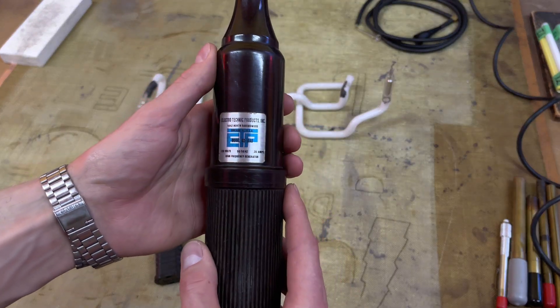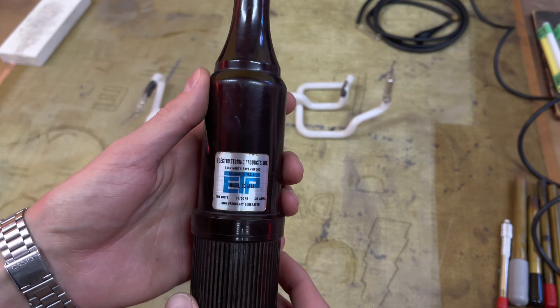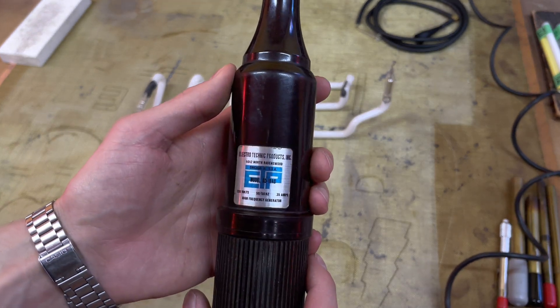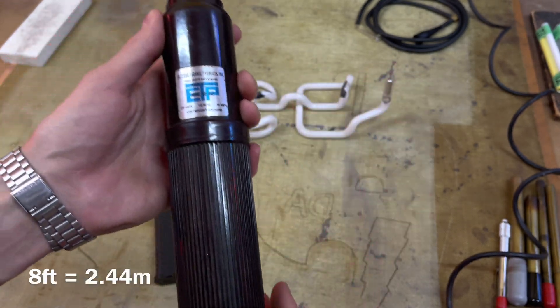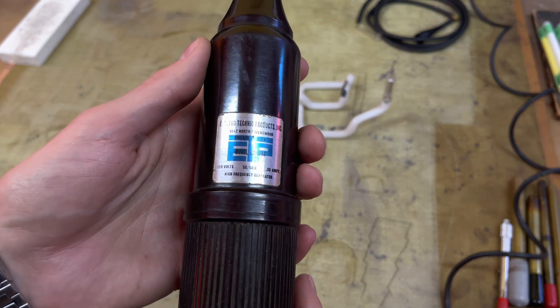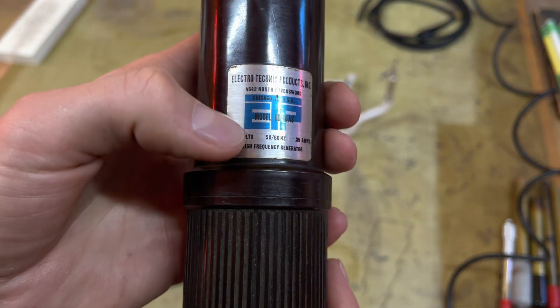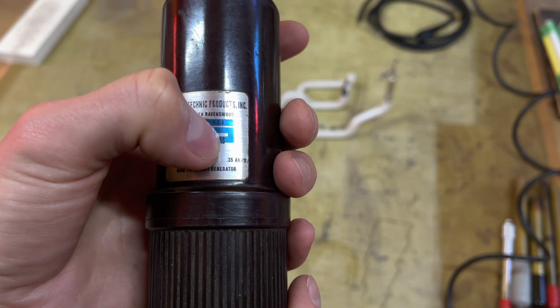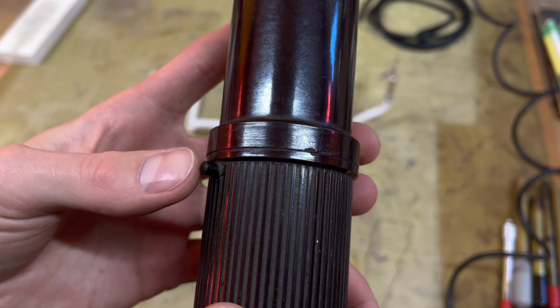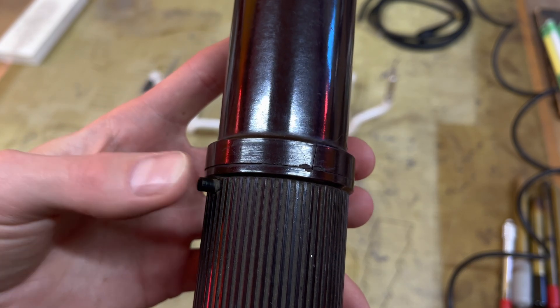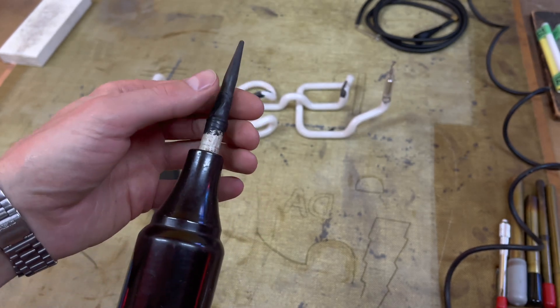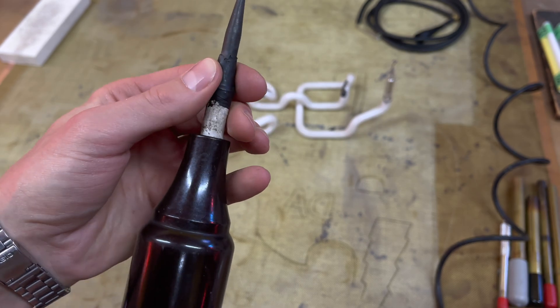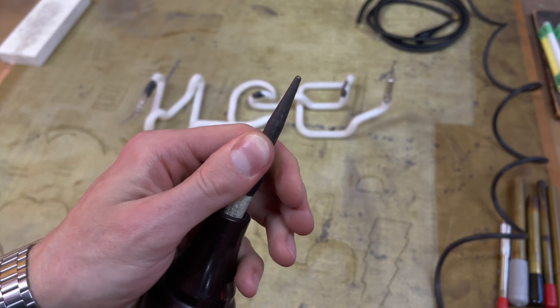Next we have is a spark coil. It's a handheld tesla coil and it is corded, so that is a disadvantage. You have to have a wall outlet within eight feet or so. This is Electrotechnics Products, model BD-10AS. The S on the end means it has a switch, this momentary push button switch that activates the spark coil. It has interchangeable tips, so you can put for example a spring tip or this solid pointer tip.